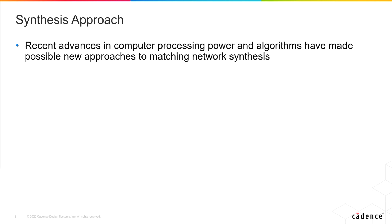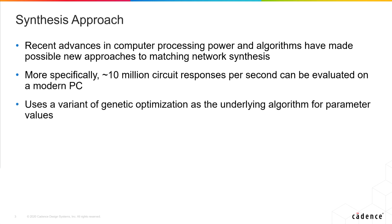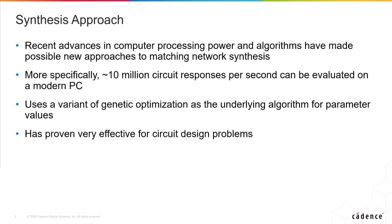A few notes about the specifics of our approach. We are taking advantage of recent advances in computer processing power and algorithms. More specifically, we can evaluate around 10 million circuit responses per second on a modern PC. We do use a variant of genetic optimization for the underlying search, for the actual topologies as well as for the parameter values. This particular algorithm has proven very effective for circuit design problems — exactly the type of problem we're trying to tackle.